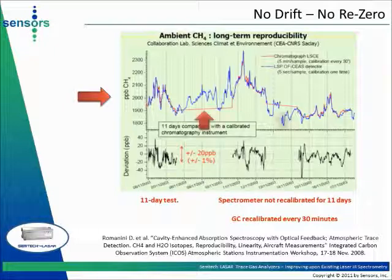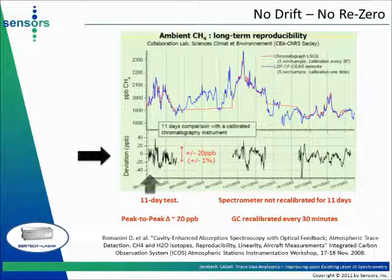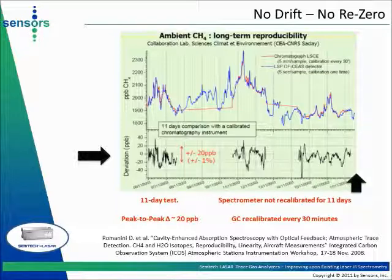The red straight lines correspond to periods during which the GC did not function. The bottom part of the graph shows the bias between the spectrometer and the GC response over 11 days. The accuracy of the measurement was 1% relative to the measured concentration, plus or minus 20 parts per billion. The spectrometer did not drift over the 11-day period of the experiment.